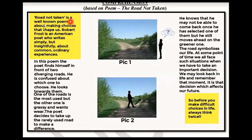'The Road Not Taken' is a well-known poem about making choices that shape us. Robert Frost is an American poet who writes simply but insightfully about common, ordinary experiences. This poem is very simple, but his words carry a very deep meaning — there is a very deep insight in his poems. He also writes about common, ordinary things.